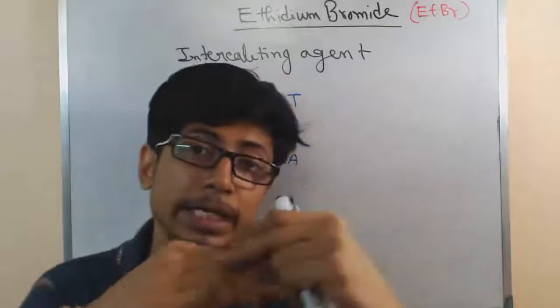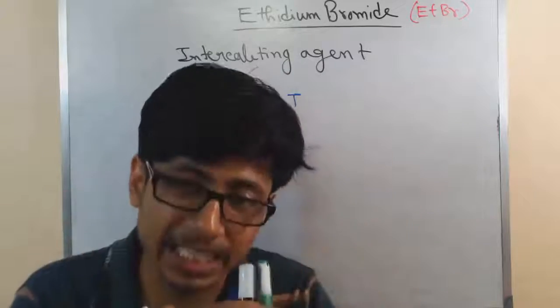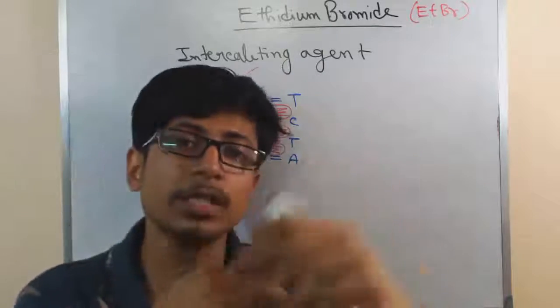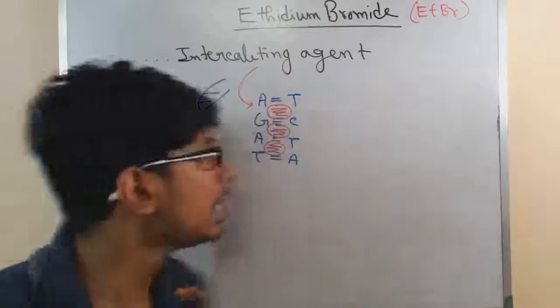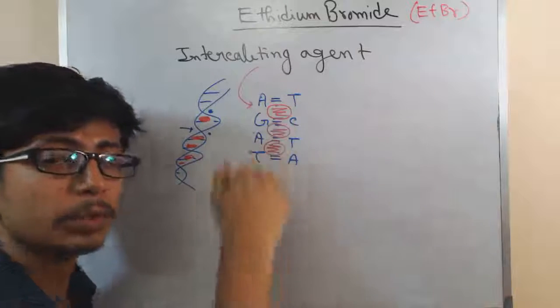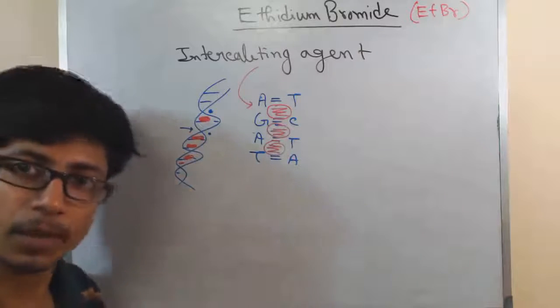This is the function of intercalating agent. They bind in between the hydrogen bonding; they are called base stacking. The interaction between this base pairing is called the base stacking interaction, and intercalating agents like ETBR are bound with those base stacking regions.